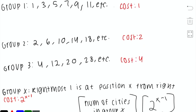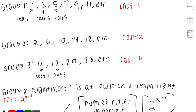An important pattern: each number in a group is an odd multiple of that group's cost. For instance, in group 3 the values are cost×1, cost×3, cost×5, and so on. So the values in each group are exactly the odd multiples of the cost associated with that group.